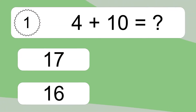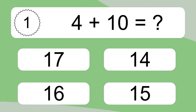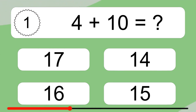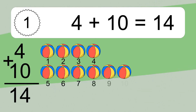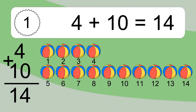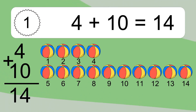4 plus 10 equals what? 4 plus 10 equals 14. Let's count it: 1, 2, 3, 4, 5, 6, 7, 8, 9, 10, 11, 12, 13, 14.